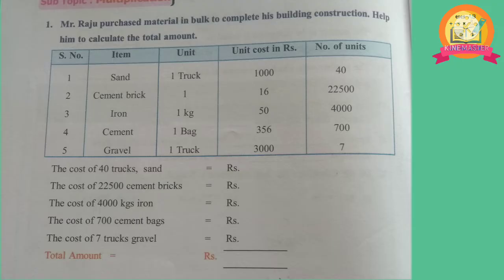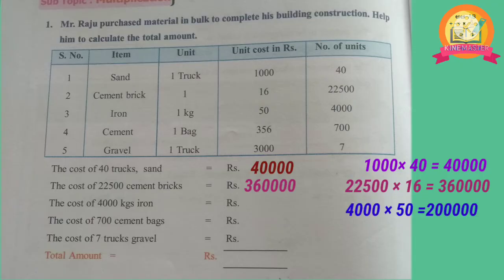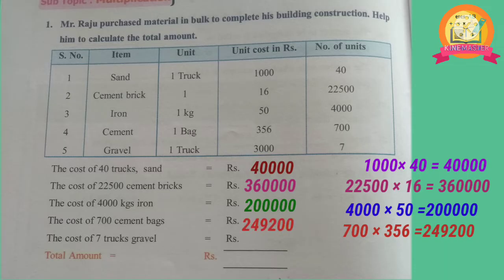Worksheet 2, first problem: Mr. Raju purchased material in bulk to complete his building construction. Help him calculate the total amount. The cost of 1 unit of each material was given. First, the cost of 40 trucks of sand: multiply 40 with the cost of 1 truck, which is 1,000. So 1,000 multiplied with 40 gives 40,000.